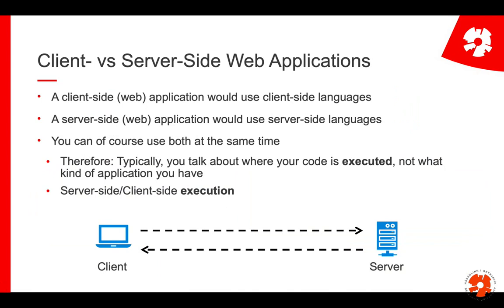To summarize, a client-side web application uses client-side languages such as JavaScript in the browser. A server-side web application uses server-side languages and executes the code on the server. But this is not very clear cut because you could have both — some PHP scripts on the server, some JavaScript running server-side, and still send some JavaScript to the browser. Typically, web applications contain both client-side and server-side code. So rather than labeling what kind of application it is, you talk about where the code is executed. In most cases, it's both.